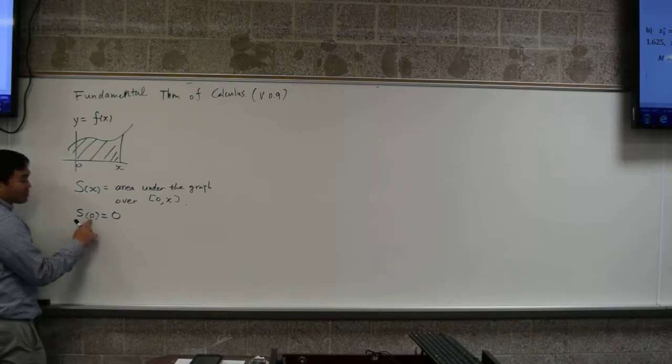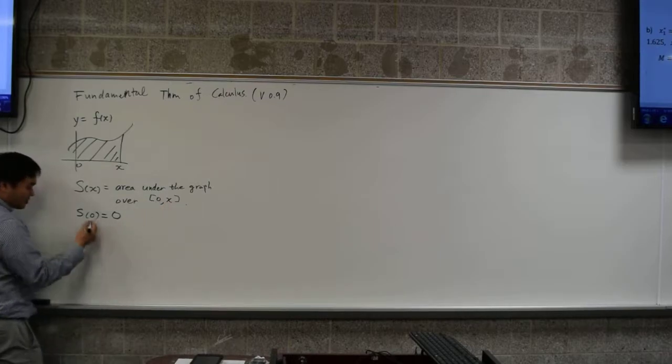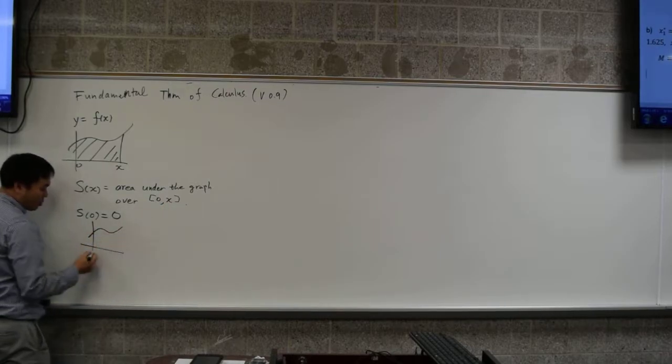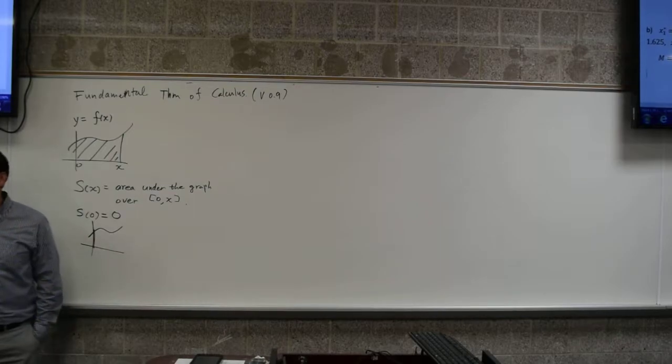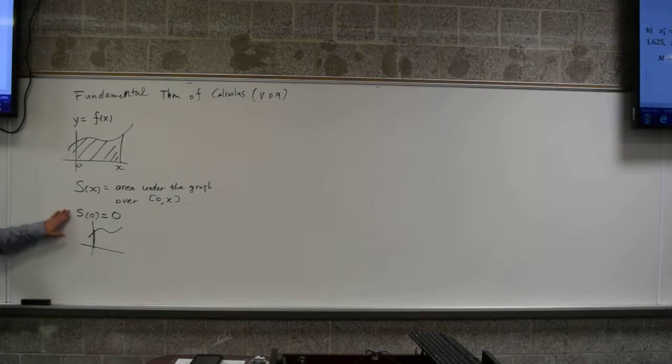So if I am asking s of 0, that's 0 to 0. So basically you're asking for the area over 0 to 0, which is just this. What's the area of a line? Zero. Lines don't have any areas. It's a 0 area. So s of 0 is 0.